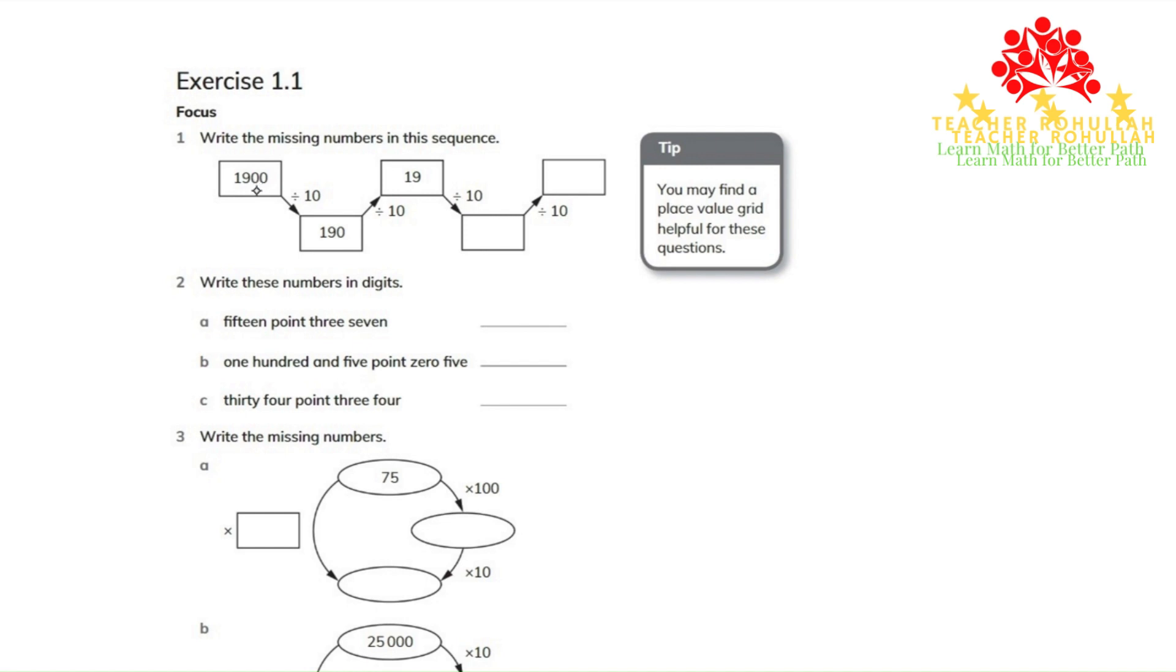In this sequence, each number starting from 1900 is divided by 10. 1900 divided by 10 is 190.